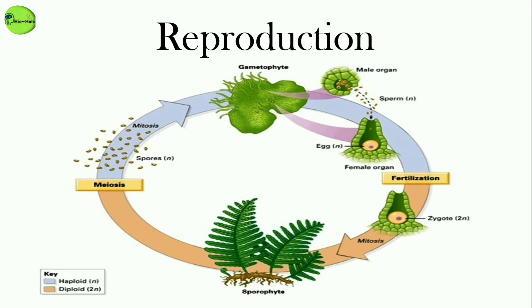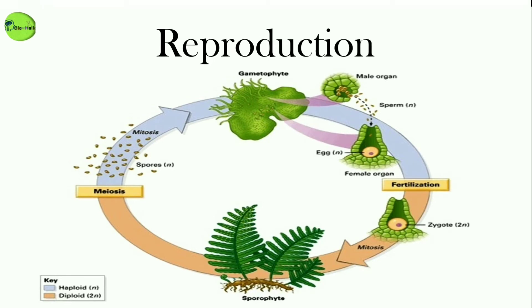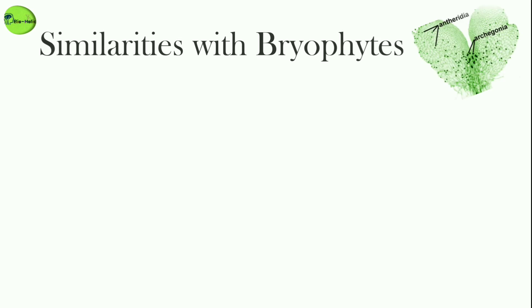After the formation of the sporophyte, the megaspores and microspores germinate and give rise to female and male gametophytes. The female gametophytes in these plants are retained on the parent sporophyte for variable periods, and the development of the zygote into young embryos takes place within the female gametophyte. This event is considered a precursor to the seed habit and an important step in their evolution.